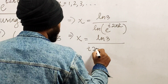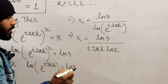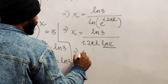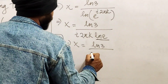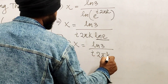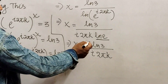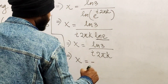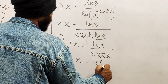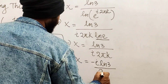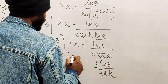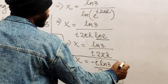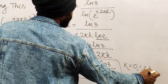Simplifying, ln(e^(i·2πk)) = i·2πk·ln(e) = i·2πk, since ln(e) = 1. Therefore x = ln(3) / (i·2πk). Multiplying numerator and denominator by i, we get x = -i·ln(3) / (2πk). There are infinitely many solutions where k = 1, 2, 3, and so on.